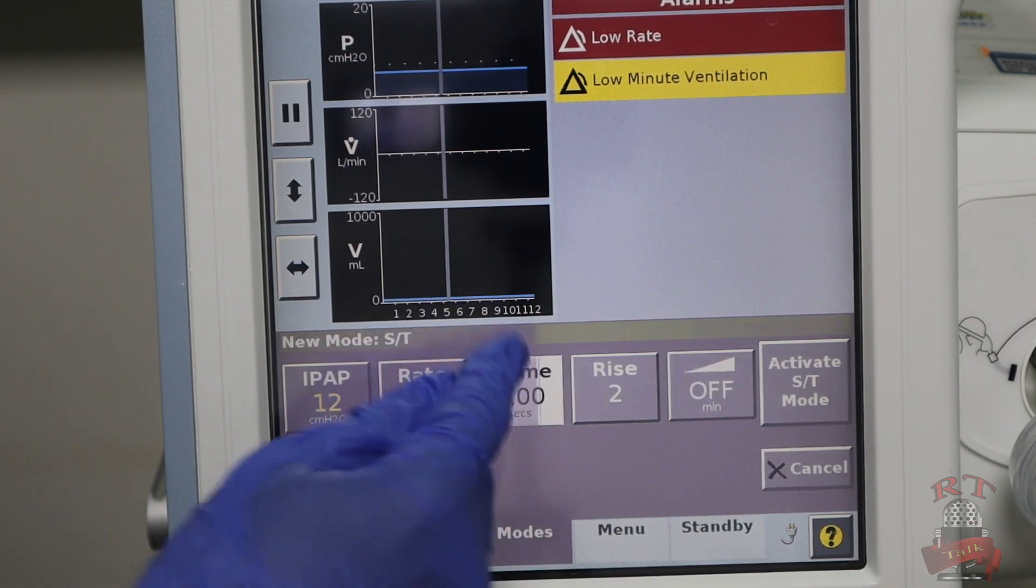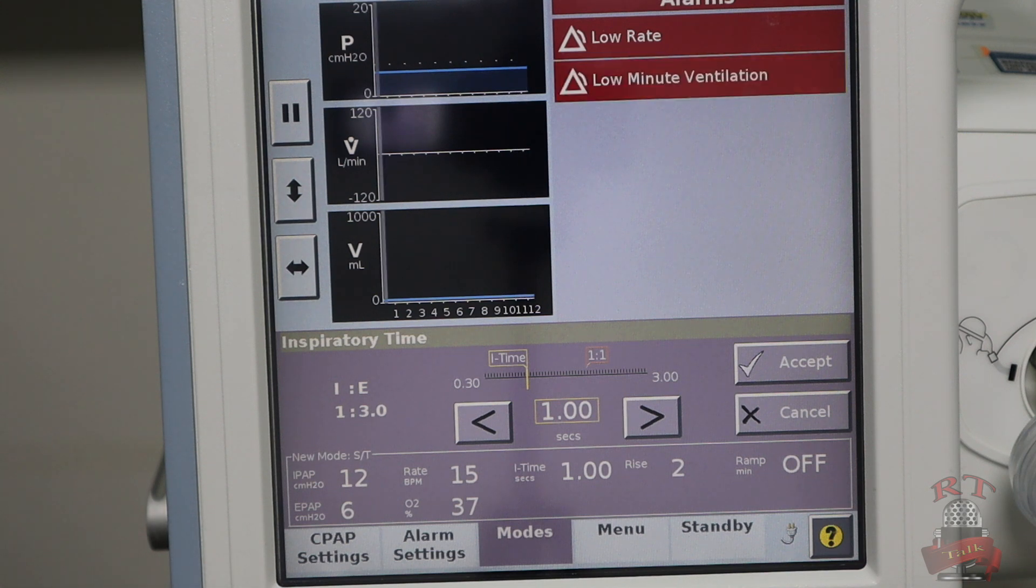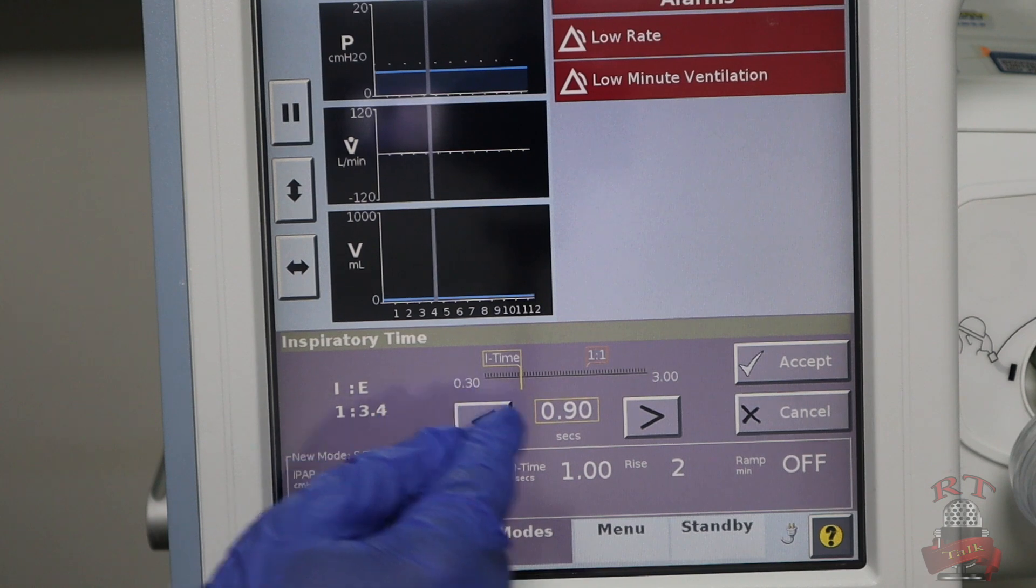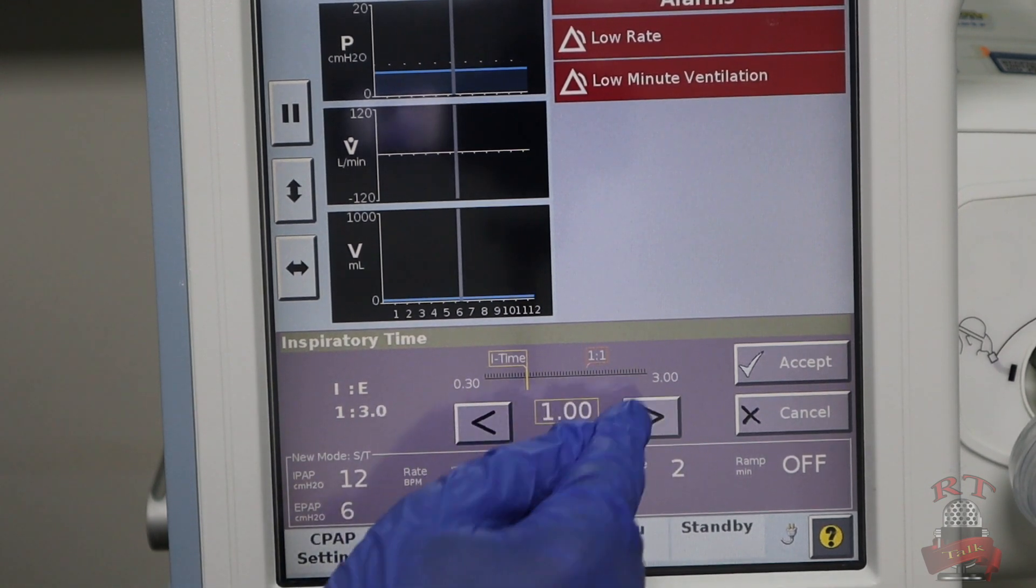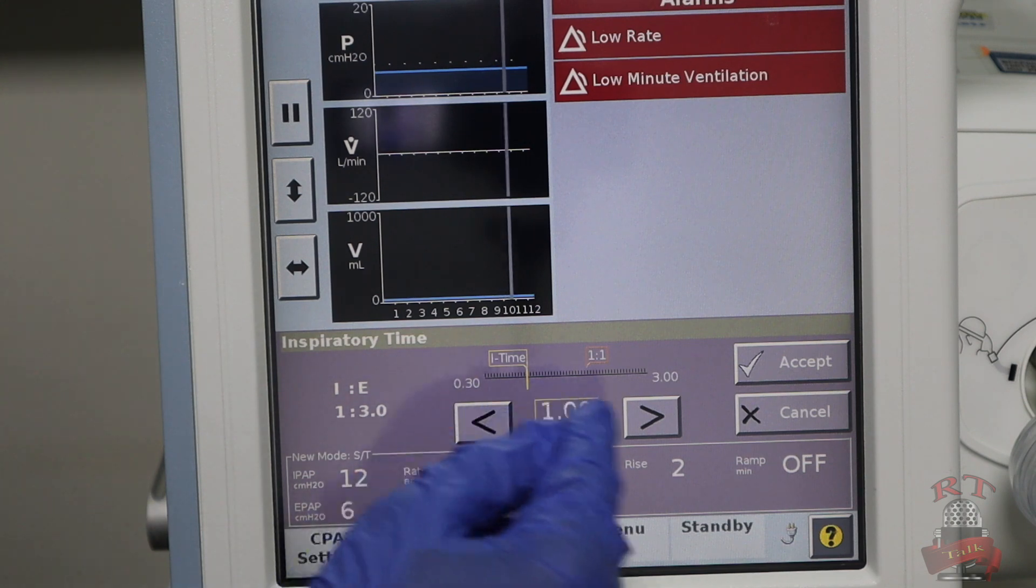Then the end expiratory time: for pediatric is from 0.6 to 0.8, and for adult is from 0.8 to 1.2. For me, let's say I'm dealing with adult. I will keep it at 1.0.